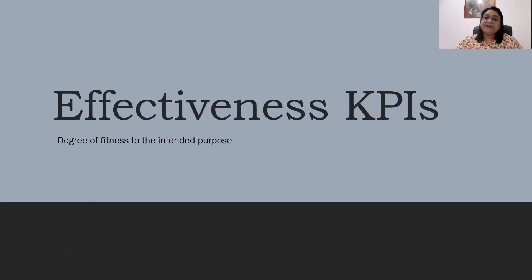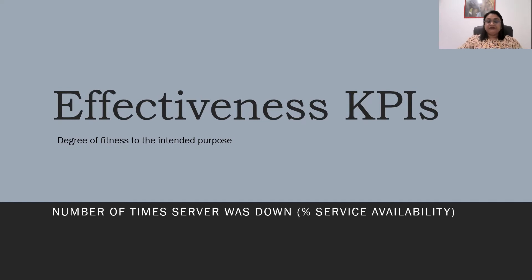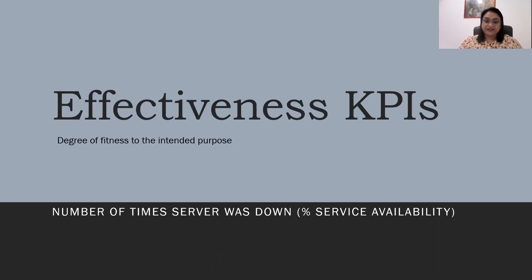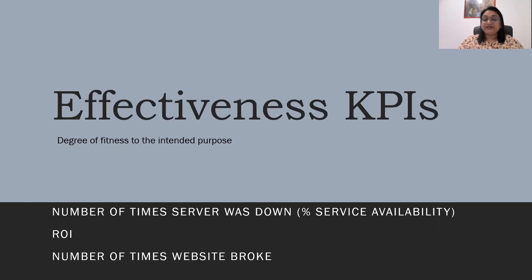The next KPI is the Effectiveness KPI. Effectiveness KPI measures how good something is for its intended purpose. For example, in a service-based organization providing internet service, KPIs could include the percentage of service availability, the number of times the server was down, return on investment, or the number of times the website broke.